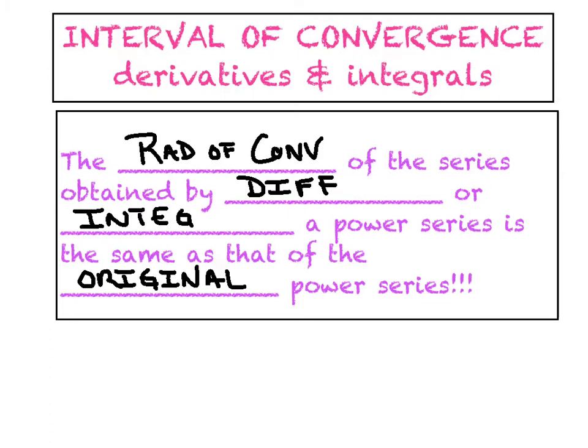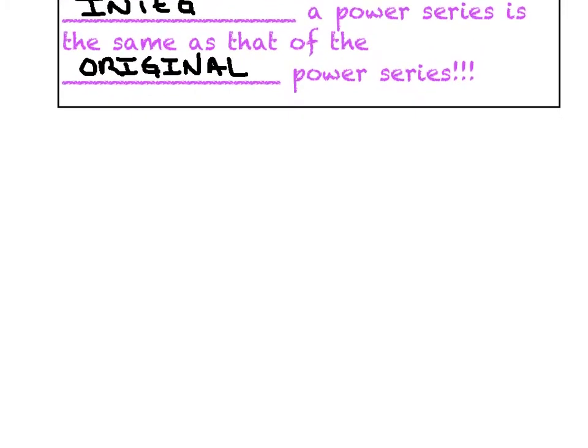Just a quick recap from yesterday. We said that there are basically three possible outcomes when we talk about an interval of convergence. Outcome number one is we said, every single series that's ever been created in the history of math is guaranteed to converge at least at its center. And in that case, the radius of convergence would be zero. That's kind of like our worst case scenario.